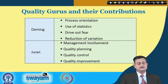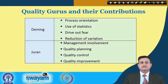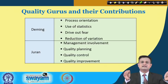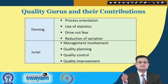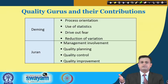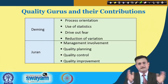Juran mainly emphasized management involvement. He believed that top management must execute their sponsorship and provide all sorts of support — whether in terms of technology, training, or recruitment of the right people — and this can really boost morale. He proposed quality planning, balancing control and improvement as a trilogy for establishing, maintaining, and achieving various quality standards.